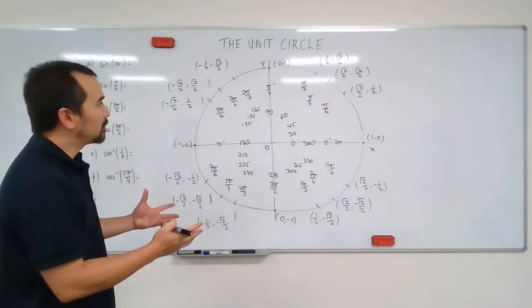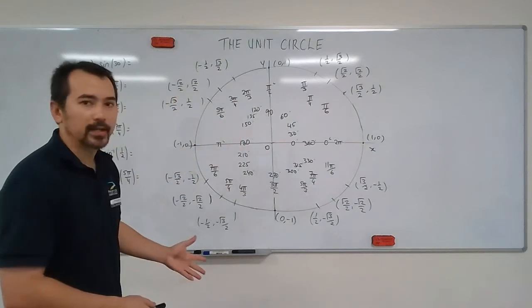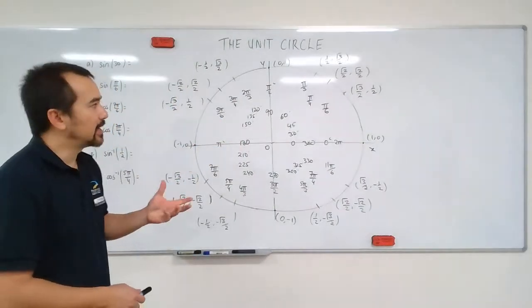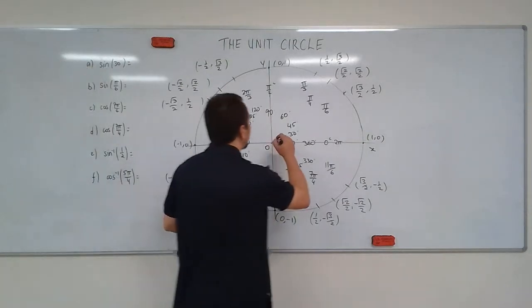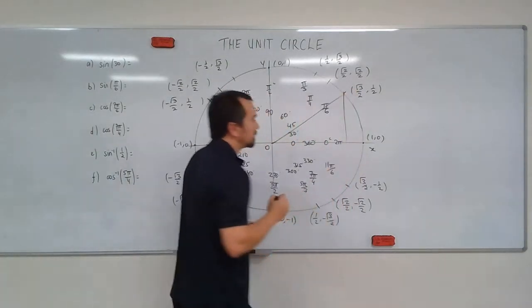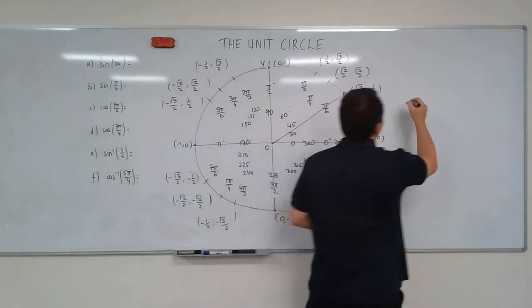So we have now established the unit circle with all of its angles and degrees and radians and all of its coordinates. Let's see if we can understand the unit circle a little bit better. I want to start by taking the 30, 60, 90 degree triangle. And I'll redraw it over here.